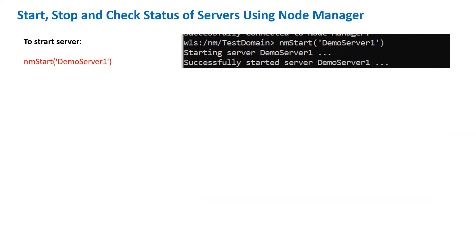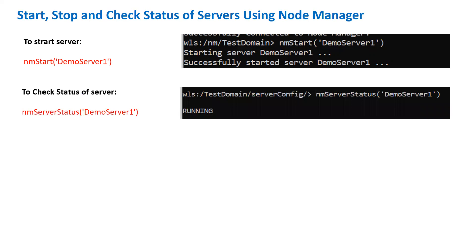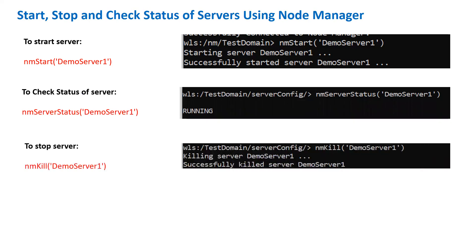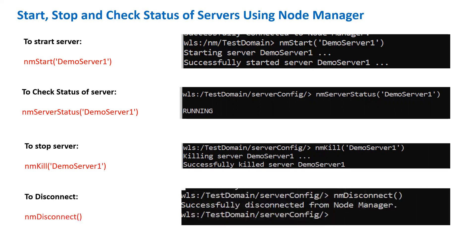Earlier we saw starting managed servers directly through the admin server using the start() and shutdown() commands. When starting managed servers via node manager, the command is nmStart() — note it is case sensitive: nm is lowercase, S is uppercase, tart is lowercase. Provide the name of your managed server in single quotes. To check the status of a managed server via node manager, use nmServerStatus() with the server name. To stop a managed server via node manager, use nmKill() with the server name. To disconnect from node manager, use nmDisconnect().